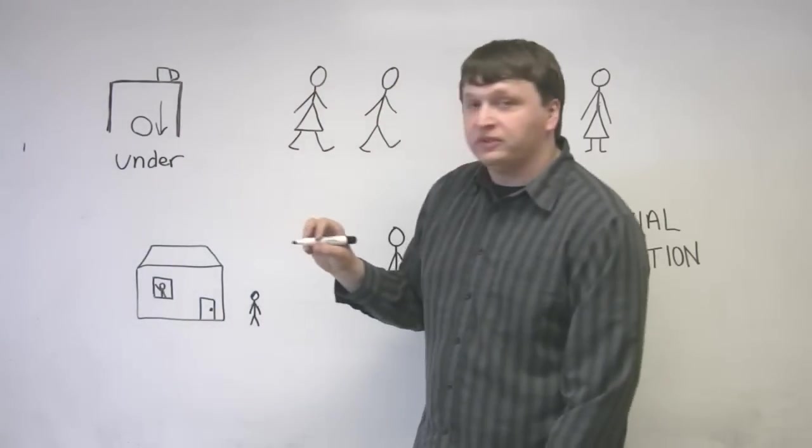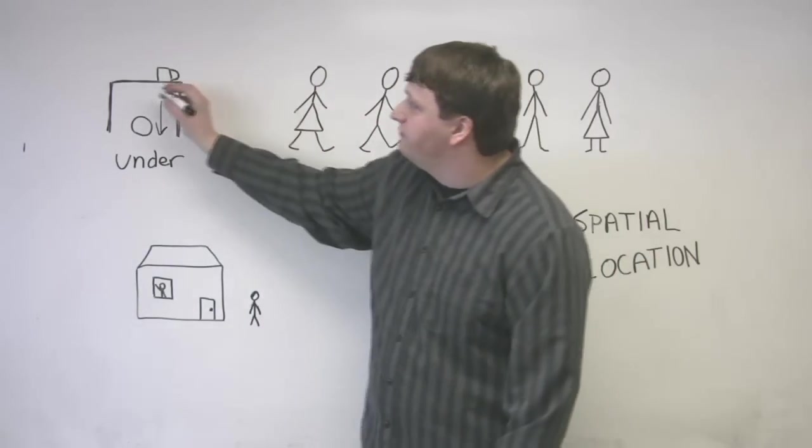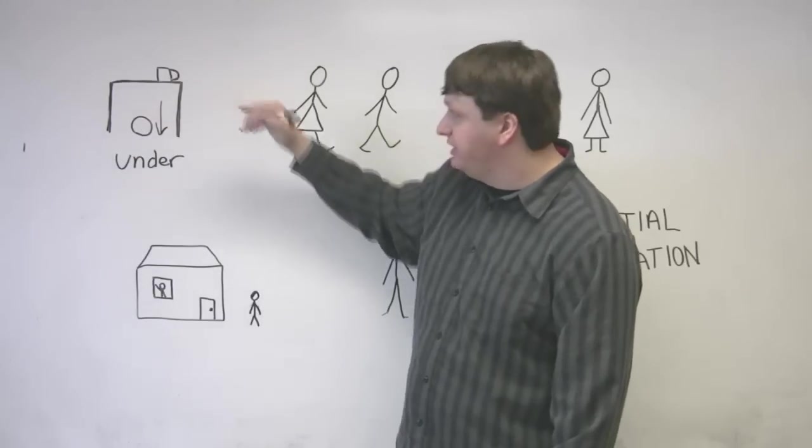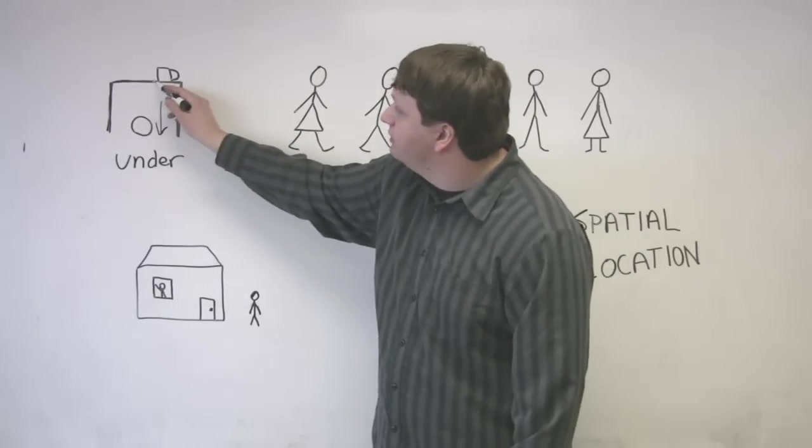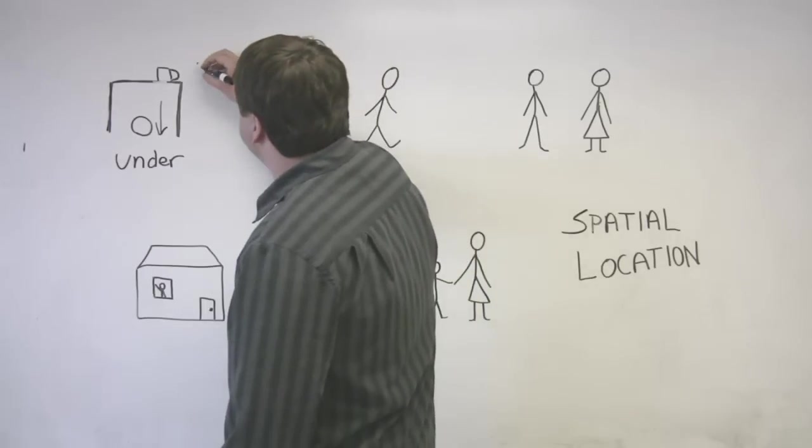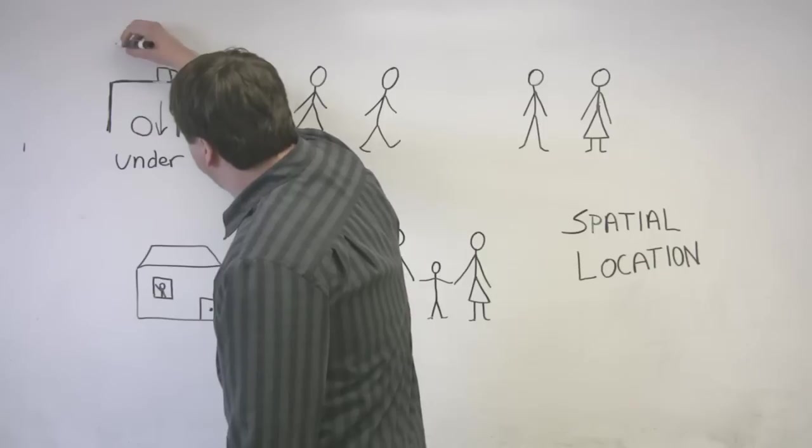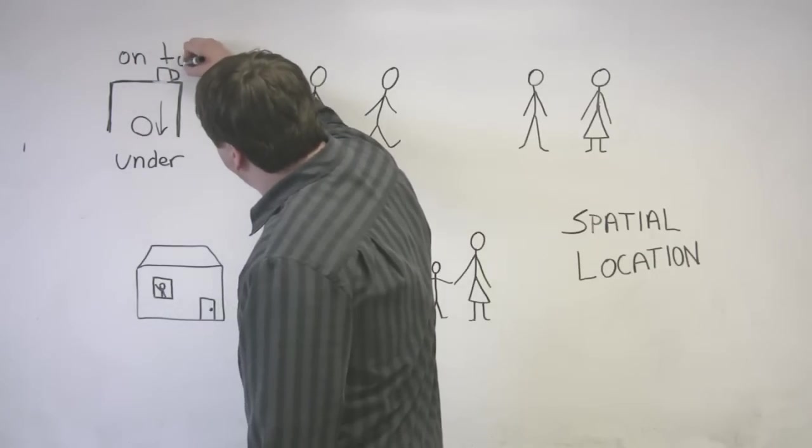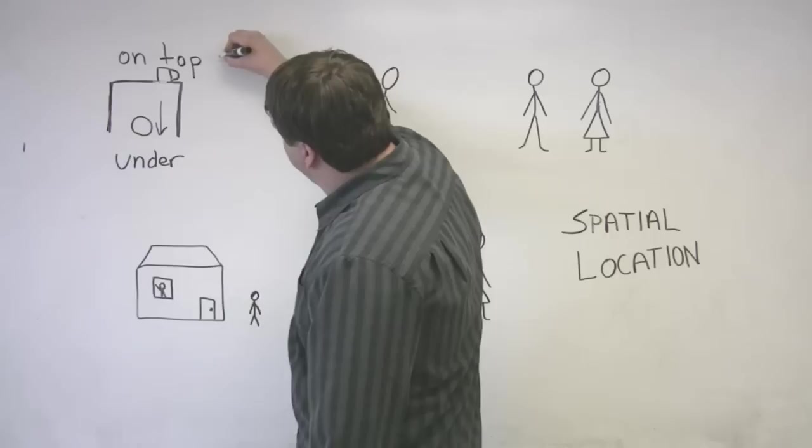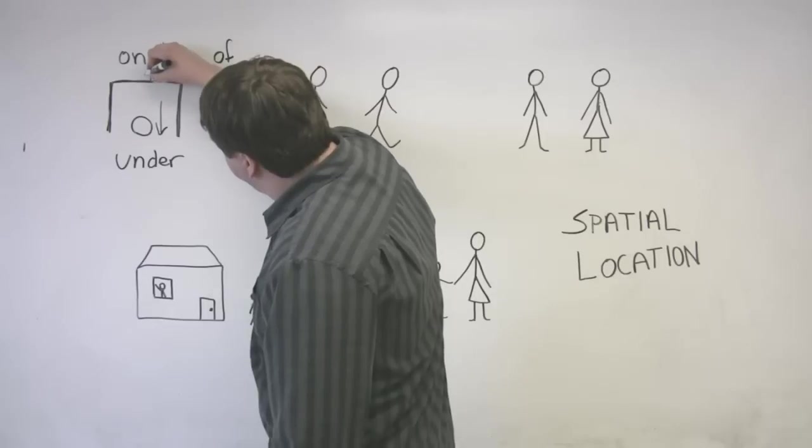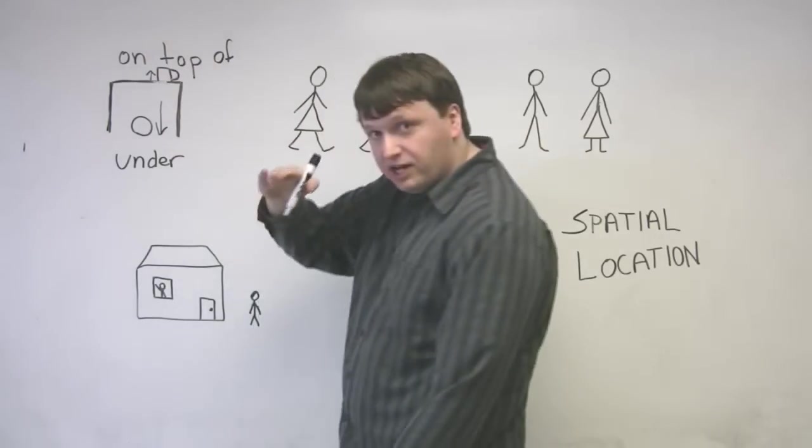Therefore, we say it is under the table. When something is on a flat surface or above something else, this mug, this cup, what we would say is on top of the table. We can draw a little arrow to show that it's on top.